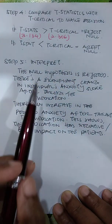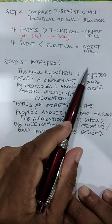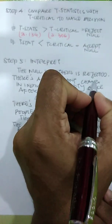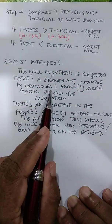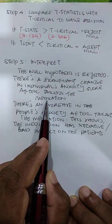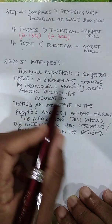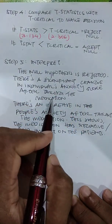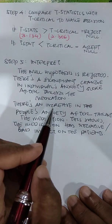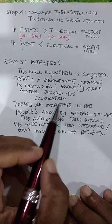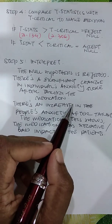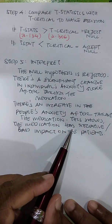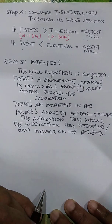The null hypothesis is rejected, so we report that decision. There is a significant change in the individual's anxiety score after taking the medication. Initially, the null hypothesis stated there is no change — the mean of differences equals zero — but now we conclude it is not equivalent to zero, meaning there is a change.